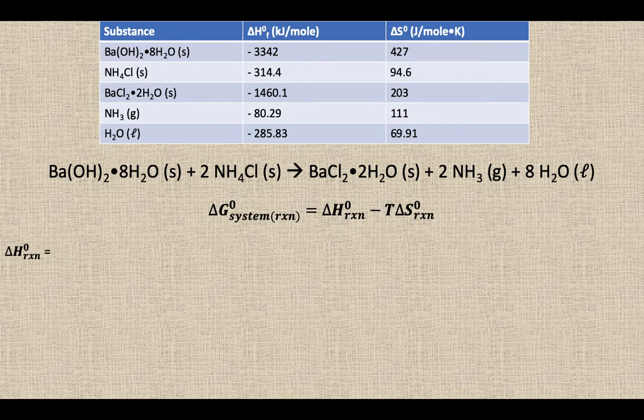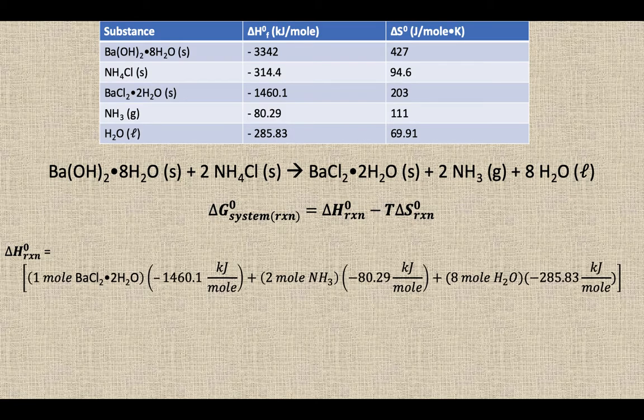So there's that data table repeated for your convenience once again, and we know our Gibbs free energy equation is delta H minus T delta S. So let's find just the delta H part. So the delta H part, we have to do products minus reactants. So we have one mole of that barium chloride dihydrate, two moles worth of ammonia, and eight moles worth of liquid water.